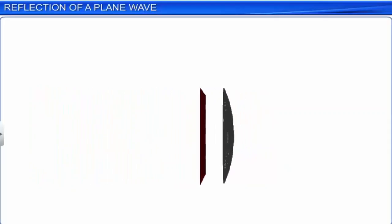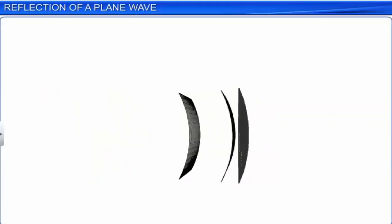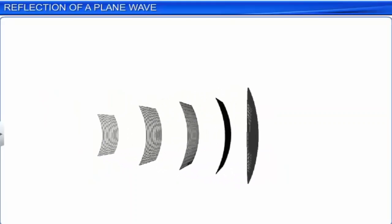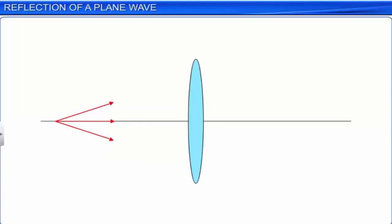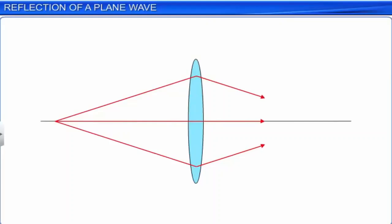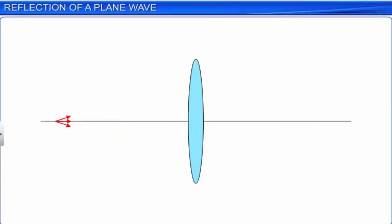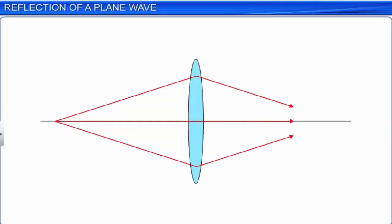If a plane wave is incident on a concave mirror, upon reflection, it becomes a converging spherical wave. Note that the time taken from a point on the object to the corresponding point on the image is the same measured along any ray. Observe the image formation of a point object placed before a convex lens. Although the ray going through the center traverses a shorter path, because of the slower speed in glass, the time taken is the same for rays traveling near the edge of the lens.